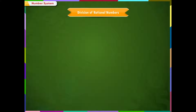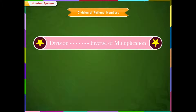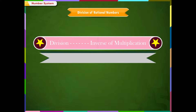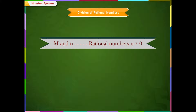Division of Rational Numbers. To learn division of rational numbers, let us recall how to divide a fraction by another fraction. Division of fractions is the inverse of multiplication. Similarly, in case of rational numbers also, division is the inverse of multiplication. If m and n are two rational numbers such that n is not equal to 0, then the result of dividing m by n is obtained by multiplying m by the reciprocal of n.